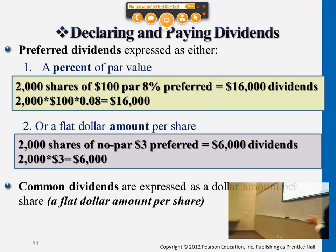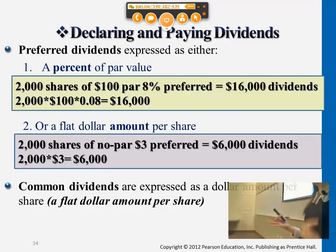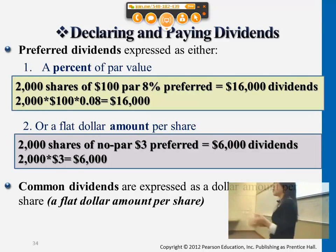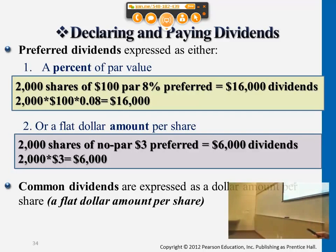Another way is just a flat dollar amount — for each share, the shareholder gets $3. So if I have one share, I'm getting $3; if I have two shares, I'm getting $6. It's not based on a percentage of face value, just a fixed dollar amount. Companies can decide whichever way to do it — this is just a way to calculate the funds that shareholders are getting.